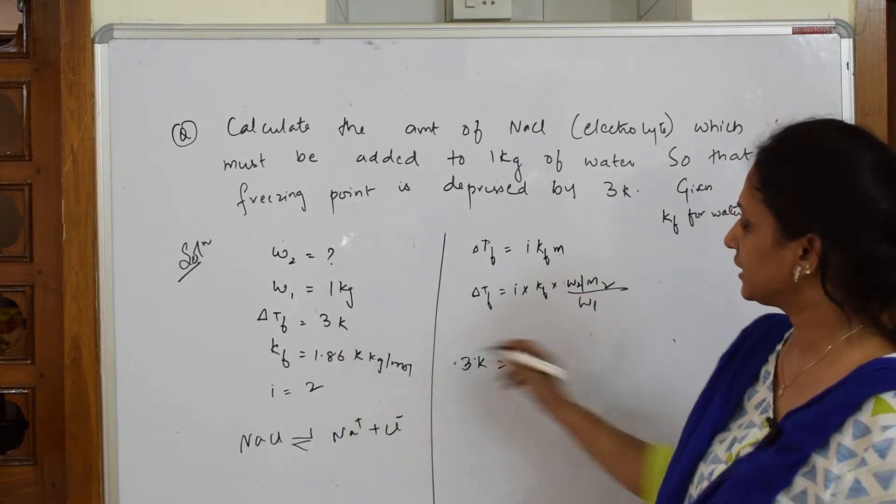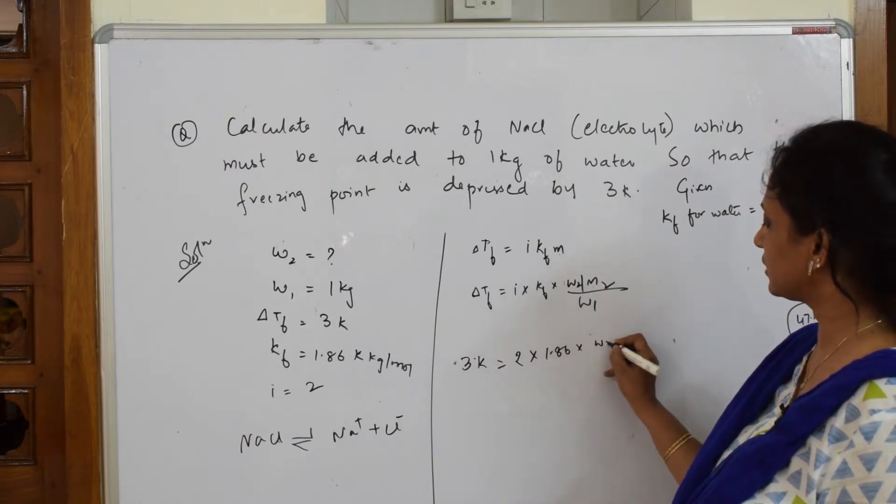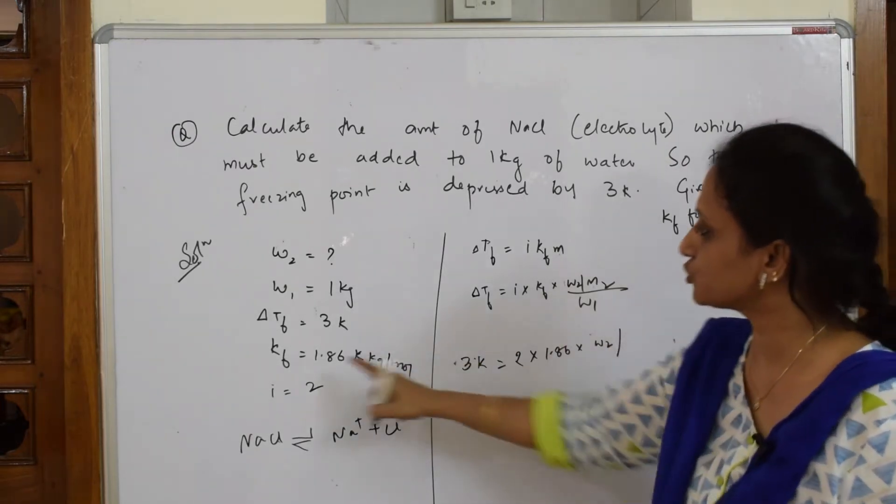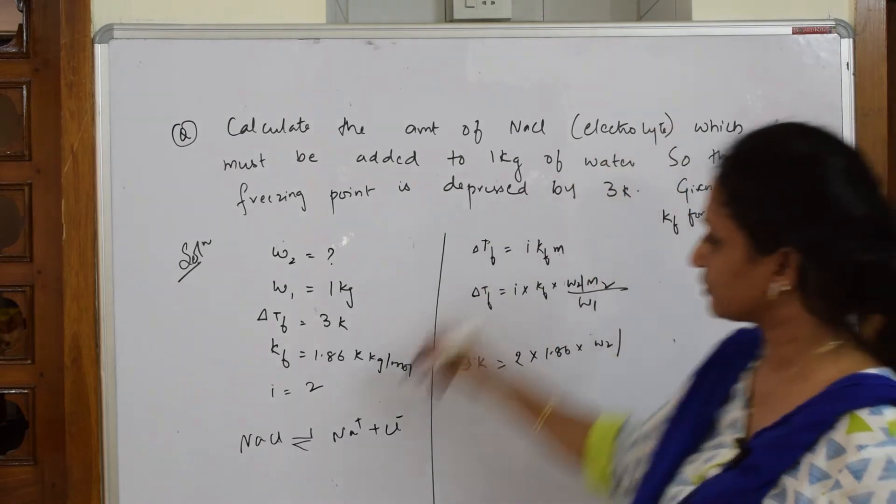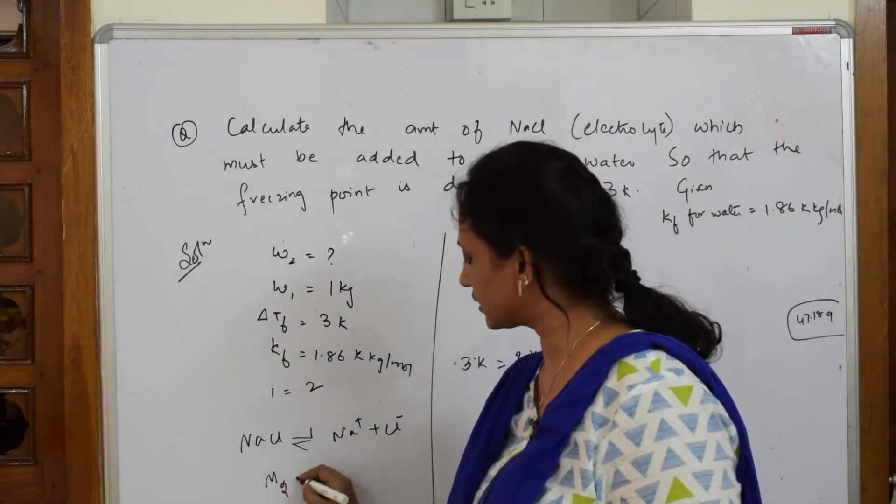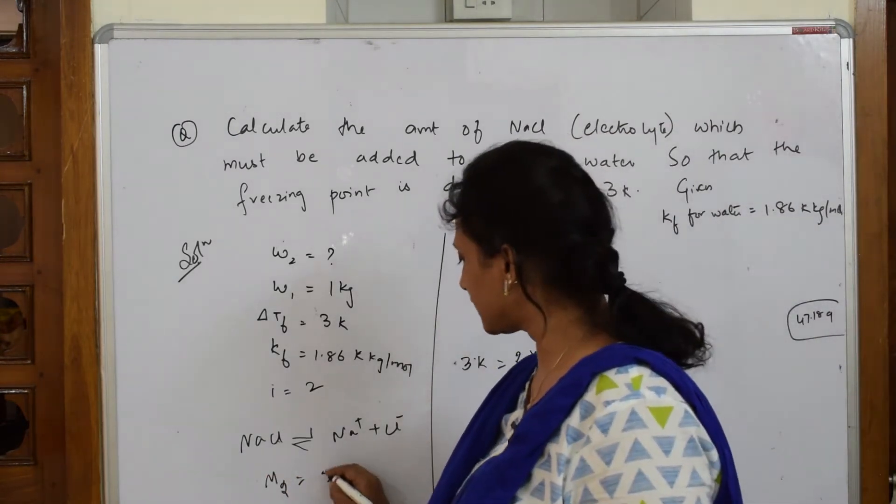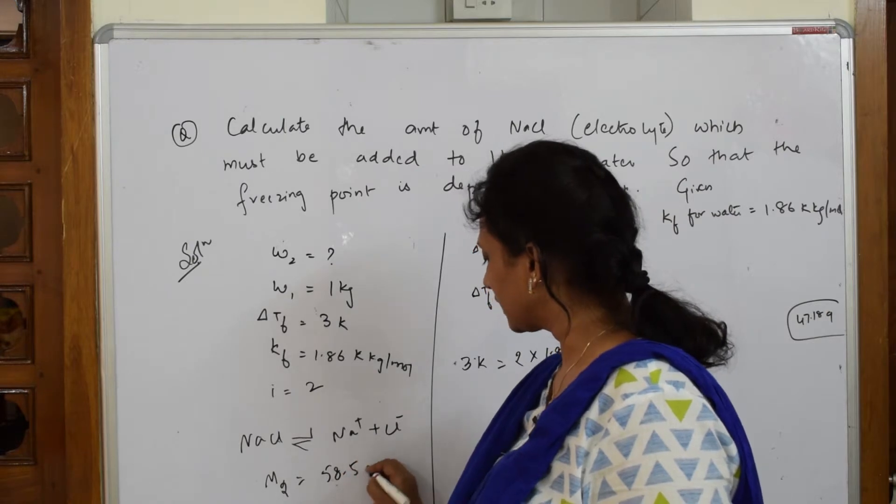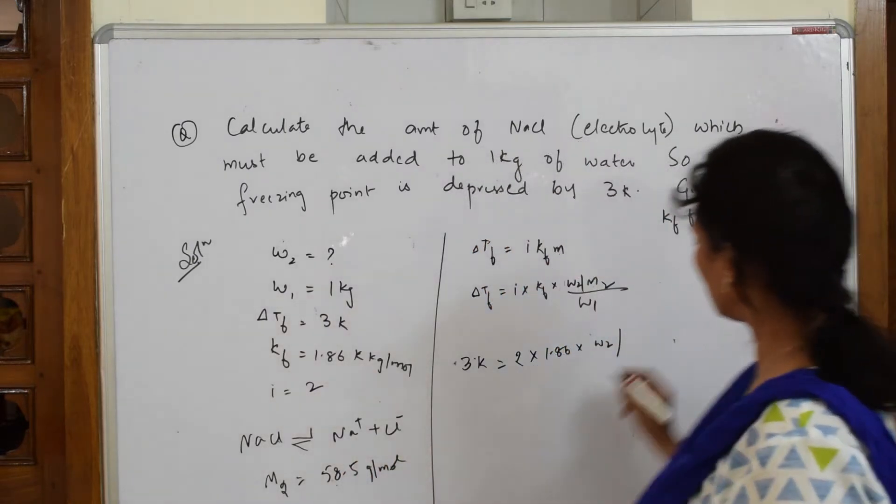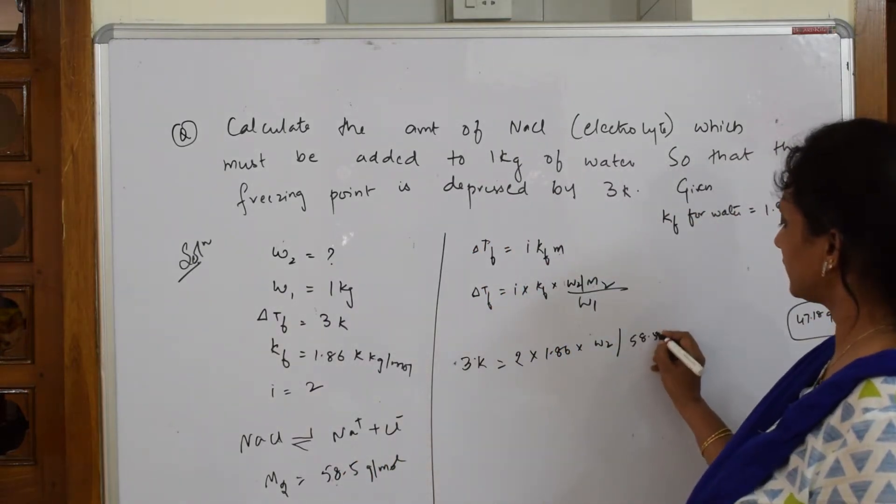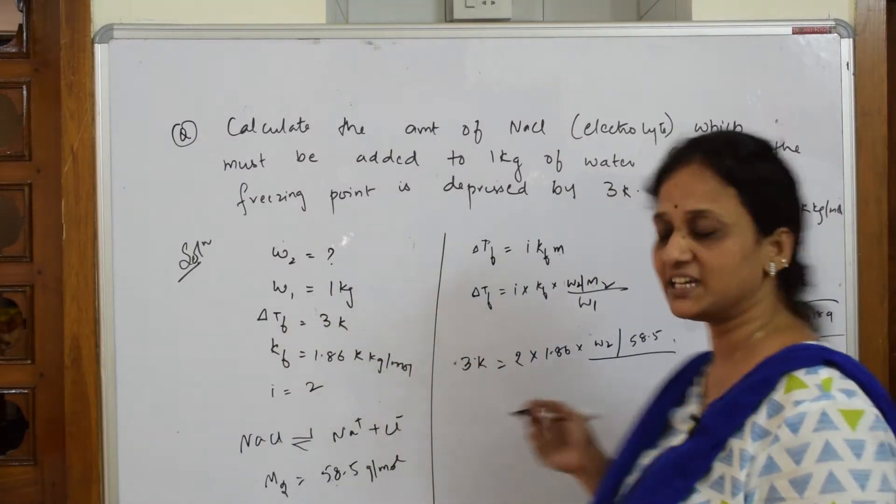What is Kf? Kf is 1.86 into w2. I have to find out what is m2. m2 for sodium chloride, that is molecular mass, is 58.5 gram per mole, so molecular mass is 58.5 divided by w1 given to us is 1 kg.